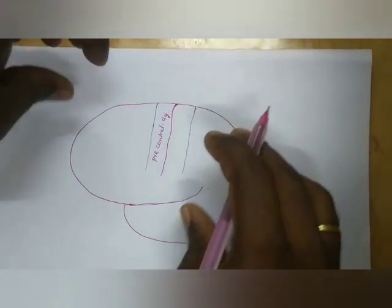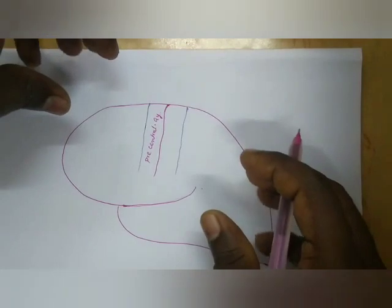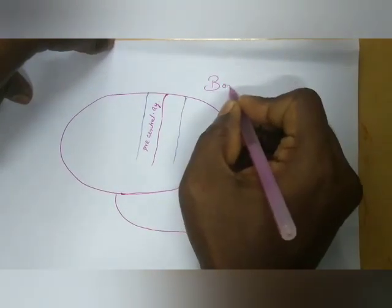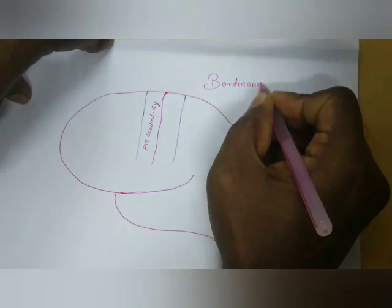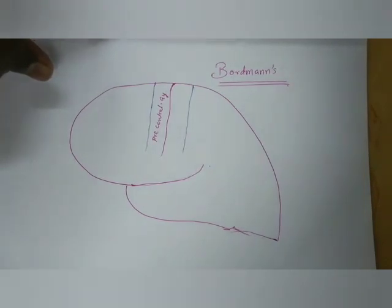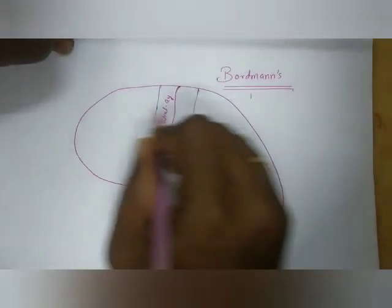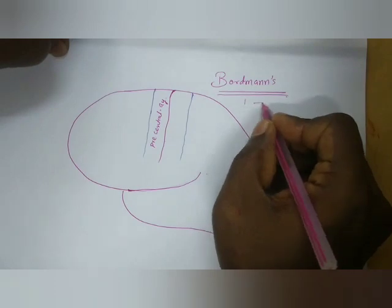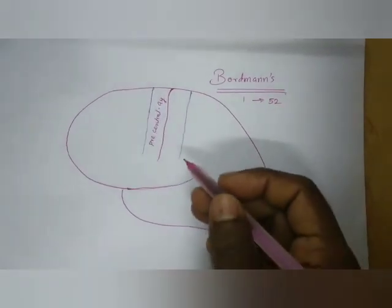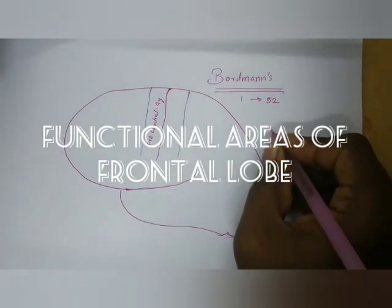Many authors have worked on the cerebral hemisphere and made mapping systems to study the functional areas. Out of these, the most accepted and widely used system is the Brodmann system. Brodmann numbered various parts of the cerebral hemisphere, giving numbers from 1 to 52. These subdivisions and their functions will be dealt with in detail in today's video.